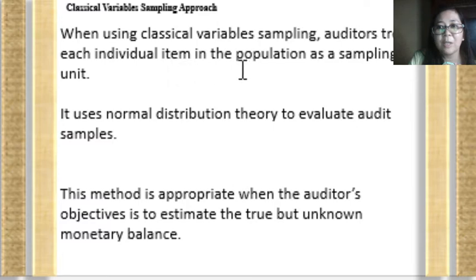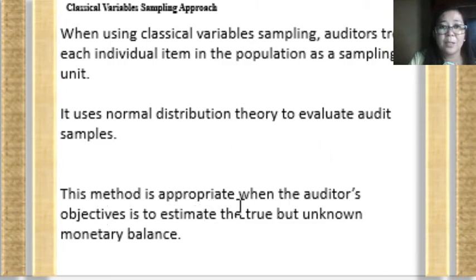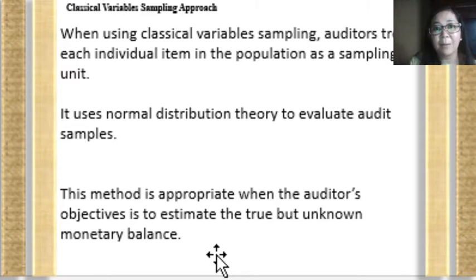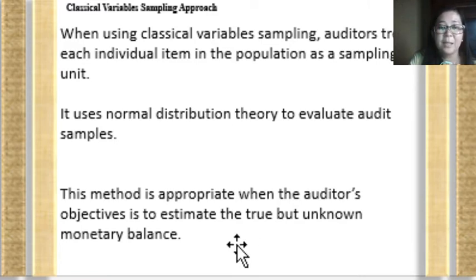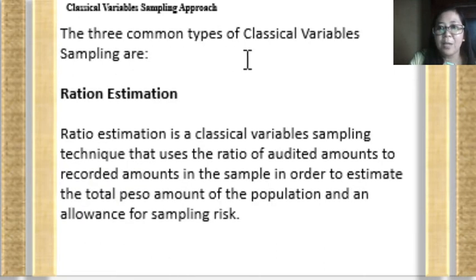The second approach is the classical variable sampling approach. Under this approach, auditors treat each individual item in the population as a sampling unit. It uses normal distribution theory to evaluate the sample. This method is appropriate when the auditor's objective is to determine the true but unknown monetary balance of an item, as opposed to value weighted sampling which primarily aims to detect overstatements.